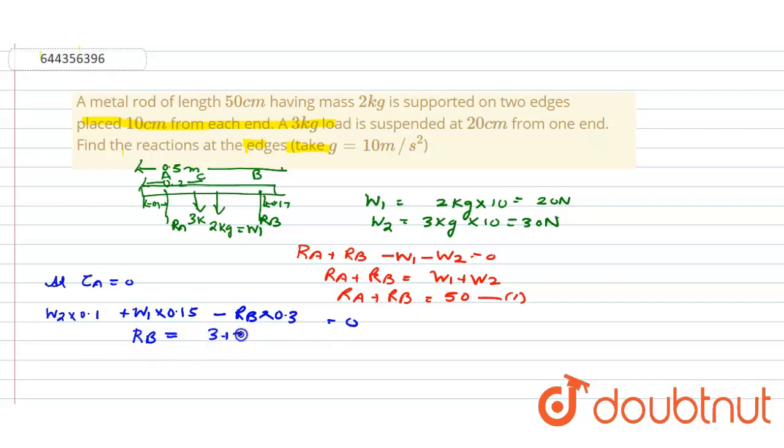When we solve this, we are getting RB equals... we can substitute W2 as 30 and W1 as 20. So when we solve this, we get RB is equal to 20 newtons. So what will be RA? RA will be 50 minus 20 newtons.